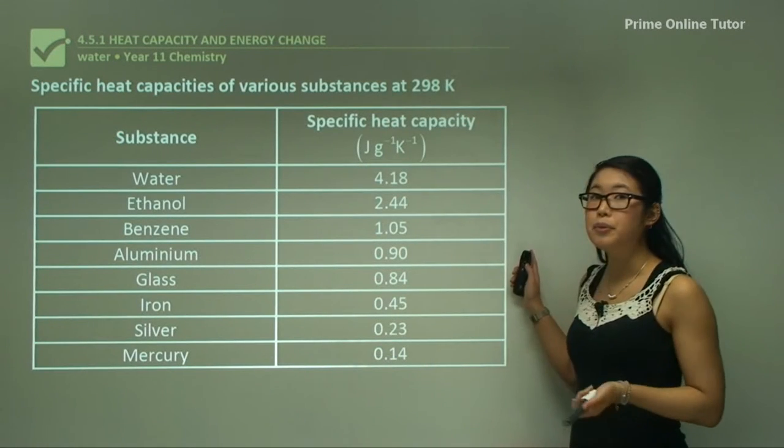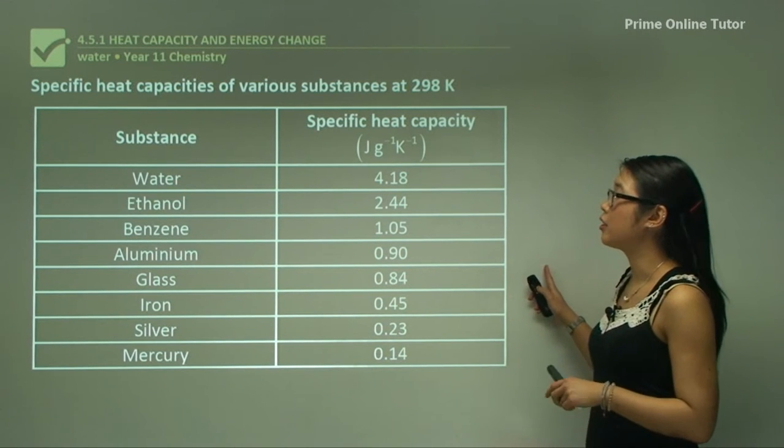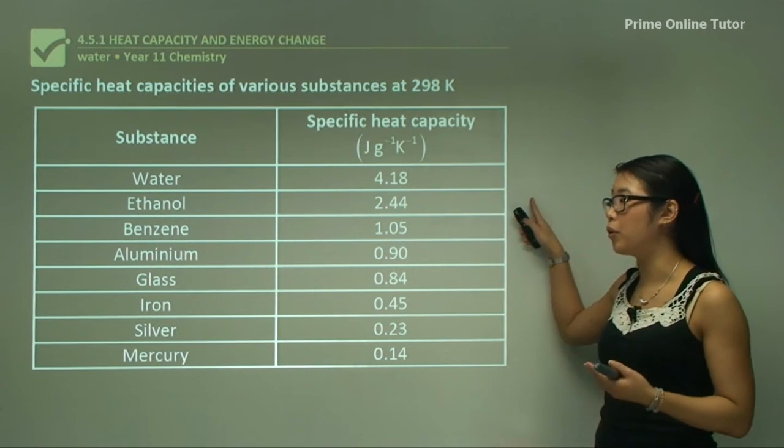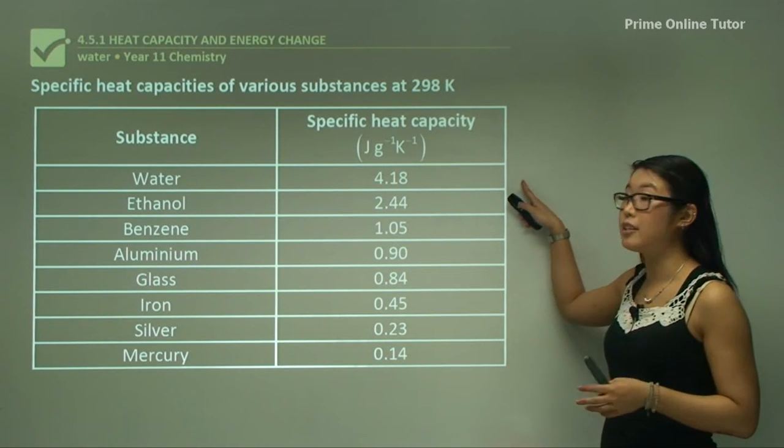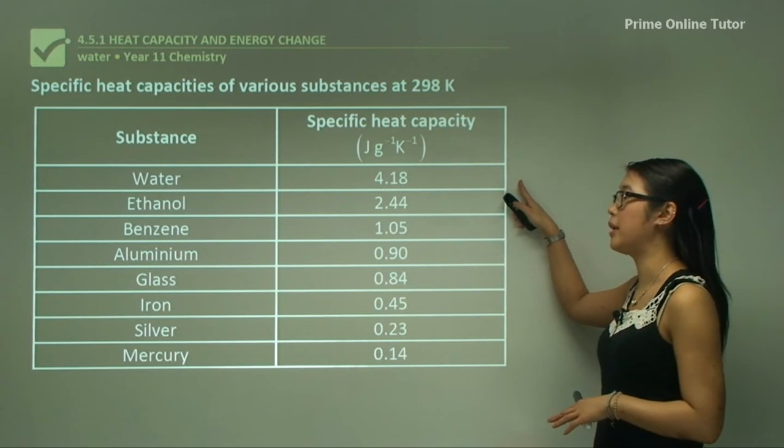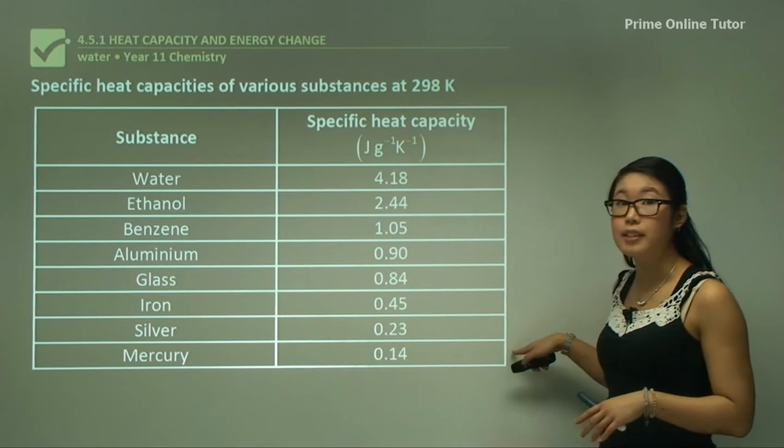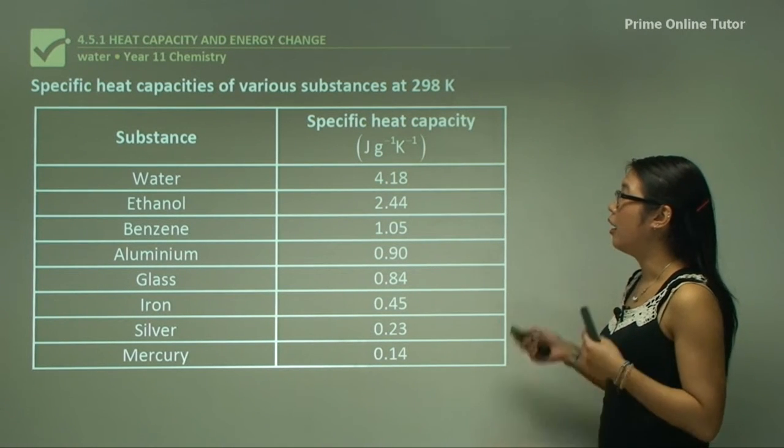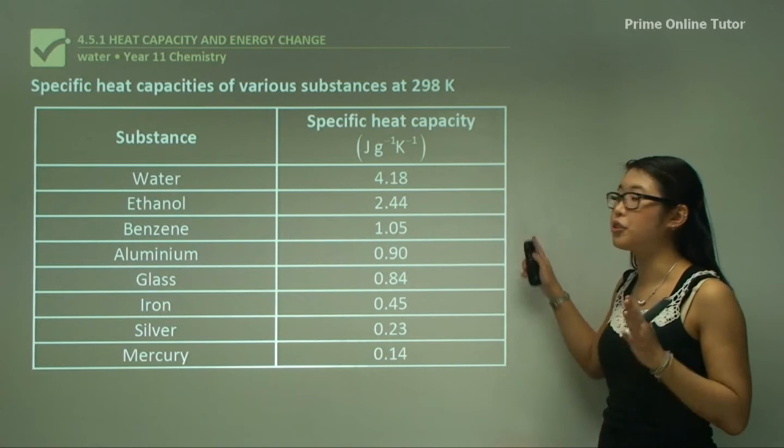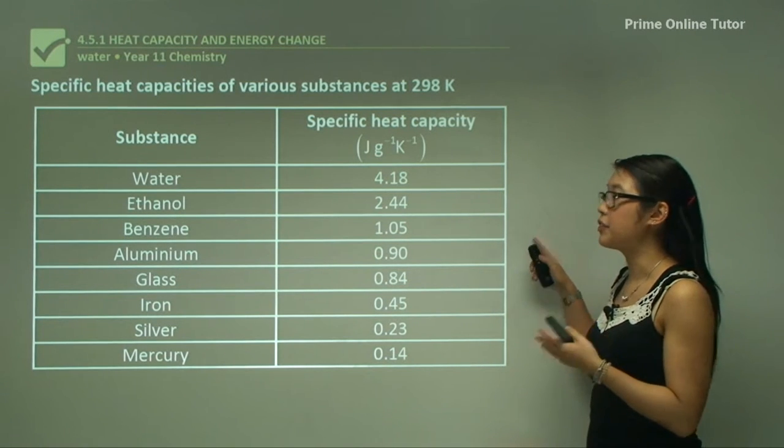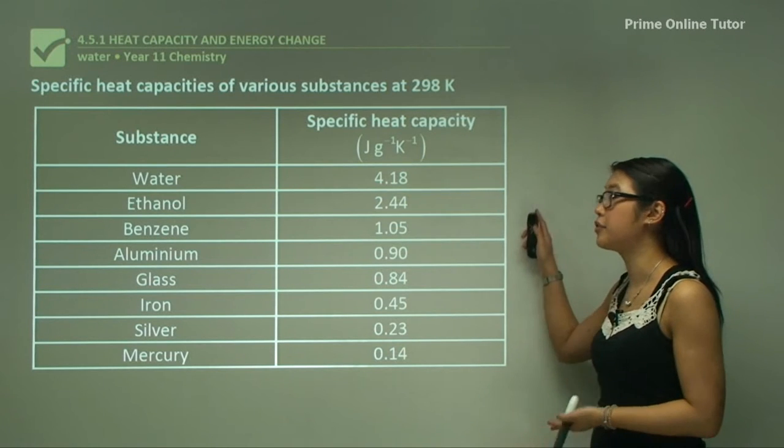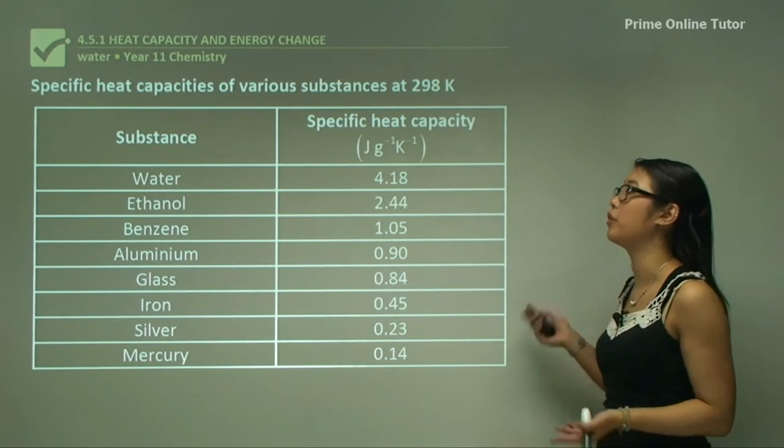When we look at this table of specific heat capacities of a variety of substances from water to mercury, we can see that water has a very high specific heat capacity at 4.18 compared to silver or mercury which are less than one. The point of this table is to show you that different substances have different heat capacities ranging from four to one or even more.